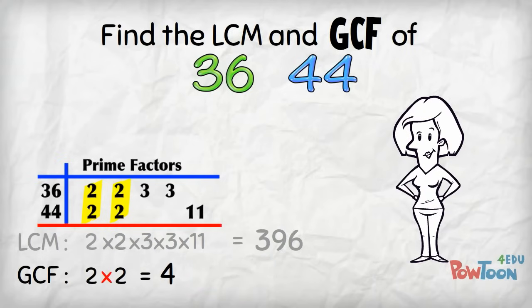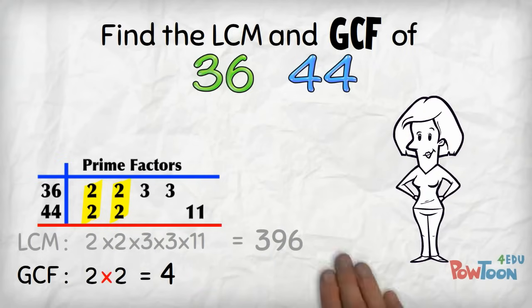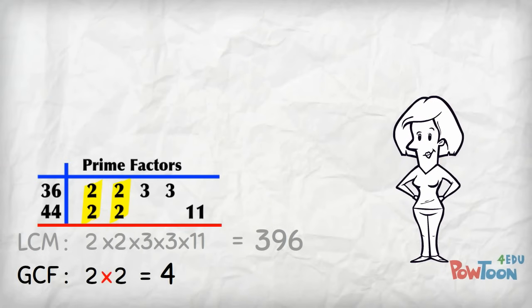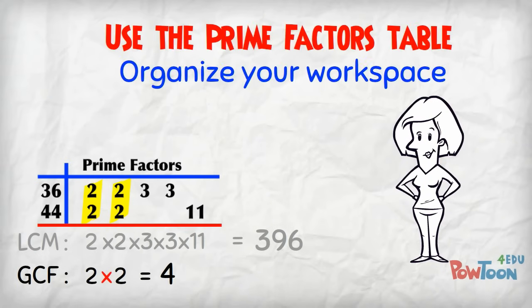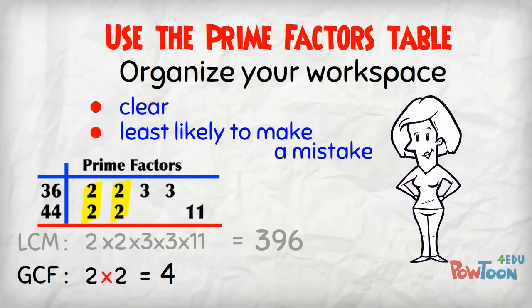I think it's beautifully simple, and it's really fast after doing the LCM. If you use the prime factors table to help organise yourself as you're working through, you're going to find it very clear and you'll be least likely to make a mistake.